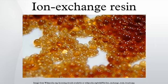The ion exchange process is also used to separate other sets of very similar chemical elements, such as zirconium and hafnium, which is also very important for the nuclear industry. Zirconium is practically transparent to free neutrons and is used in building reactors, but hafnium is a very strong absorber of neutrons and is used in reactor control rods.